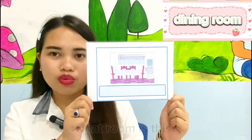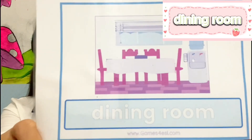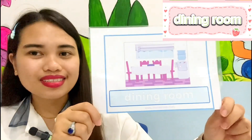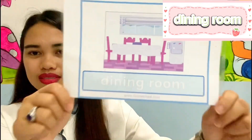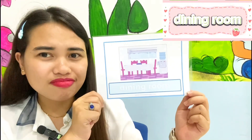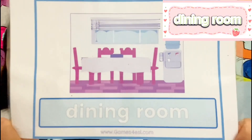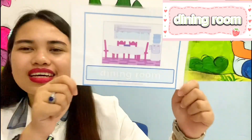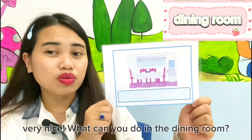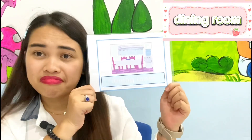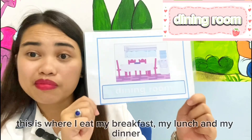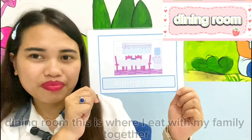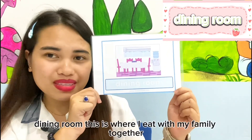Next, what room is this? Dining room. Can you say it again? Very nice. What can we do in the dining room? This is where I eat my breakfast, my lunch, and my dinner. Dining room — this is where I eat with my family together.